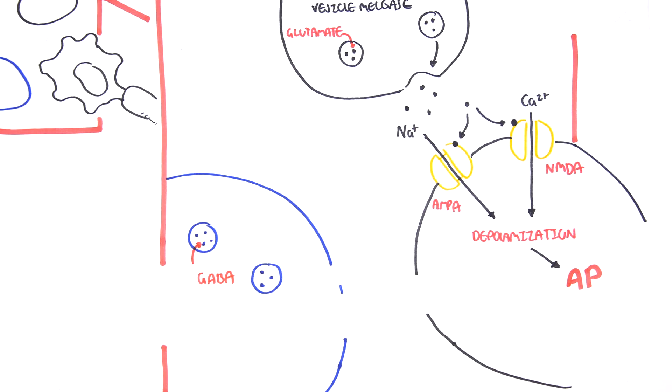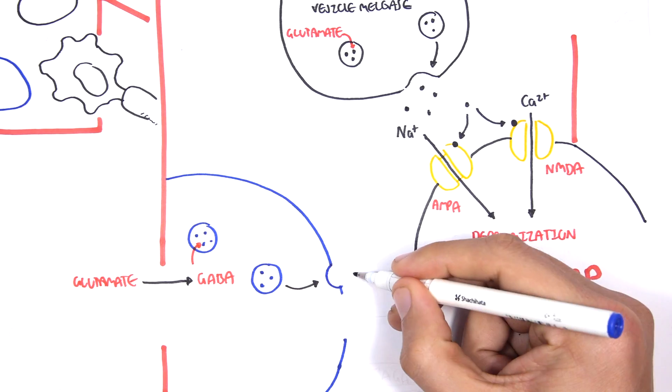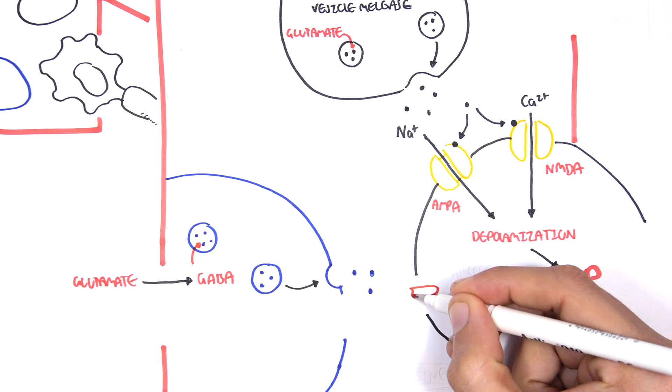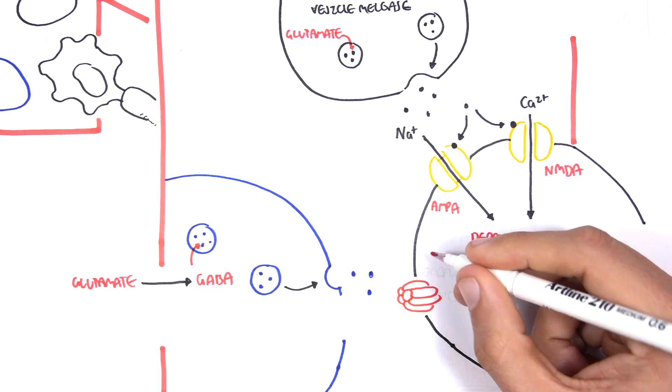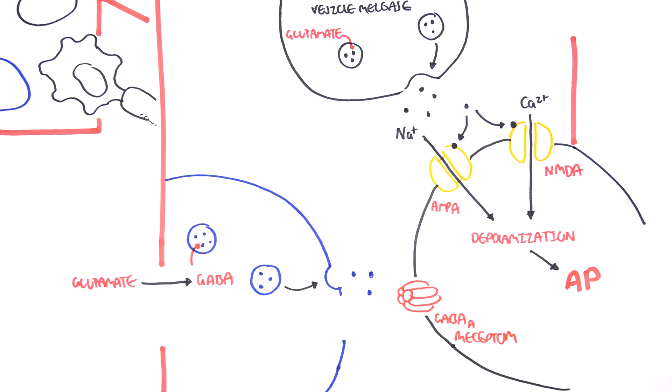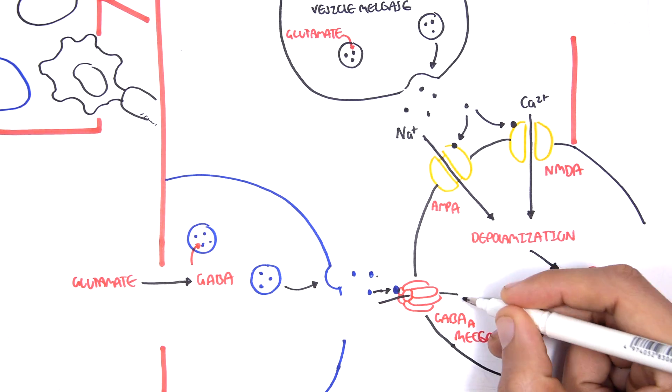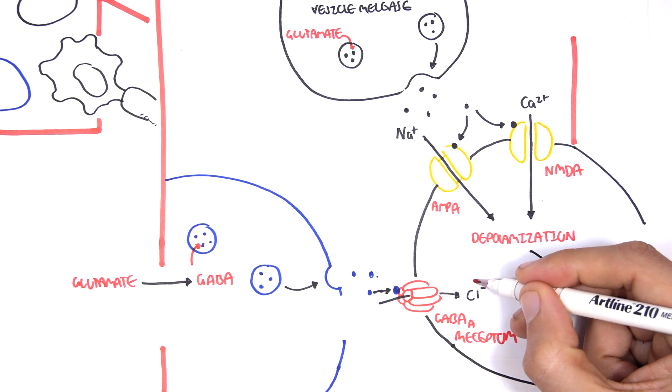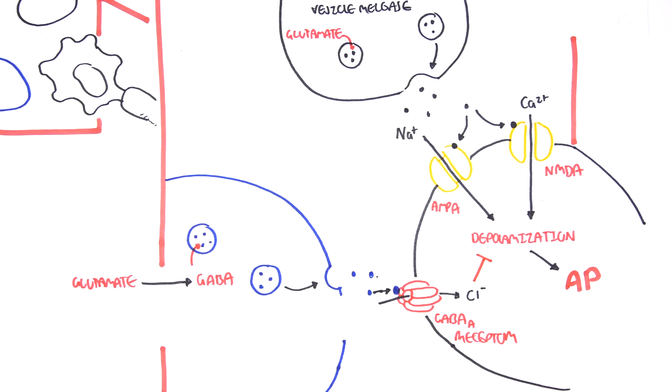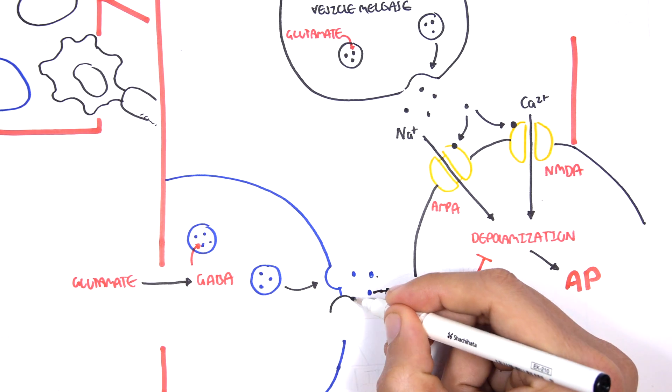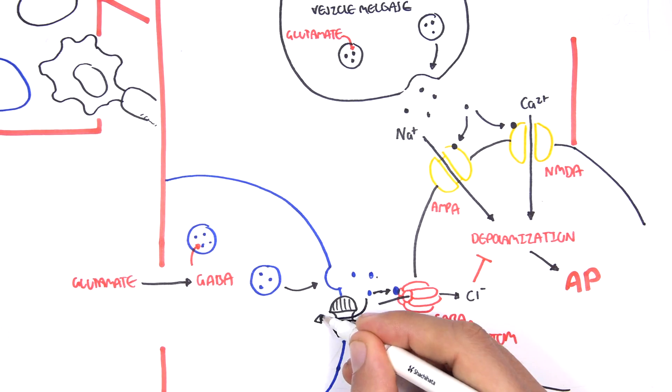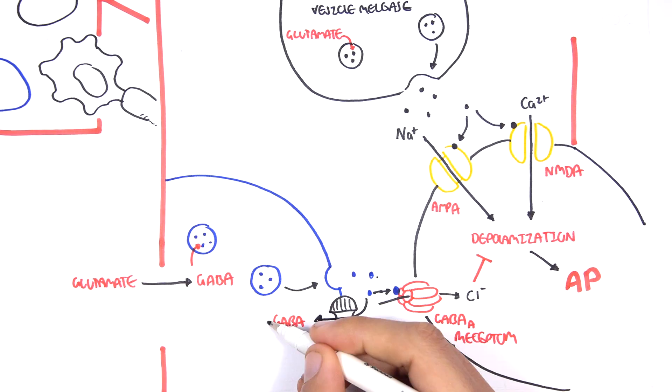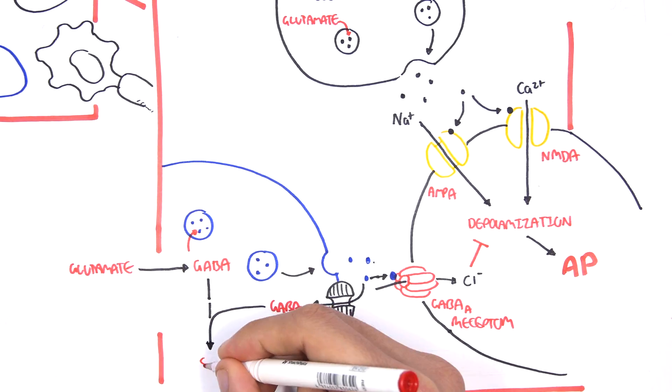Here in blue we have the GABAnergic neuron with GABA in the terminal bulb. GABA is actually made from glutamate. This neuron can release GABA, which binds onto GABA-A receptors on the postsynaptic neuron, causing an influx of chloride ions which are negatively charged. Once GABA finishes its job, it gets taken back up to the terminal bulb and converted to SSA through GABA transaminase.